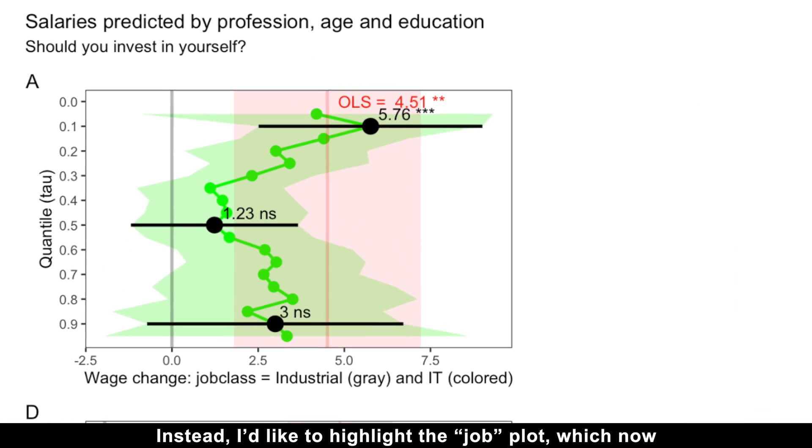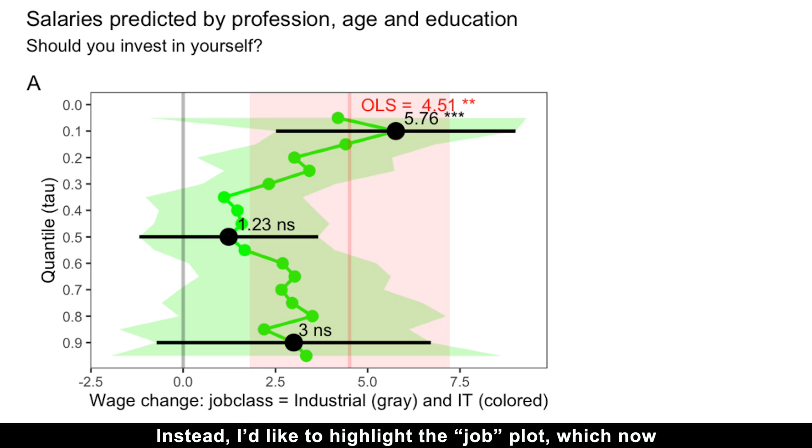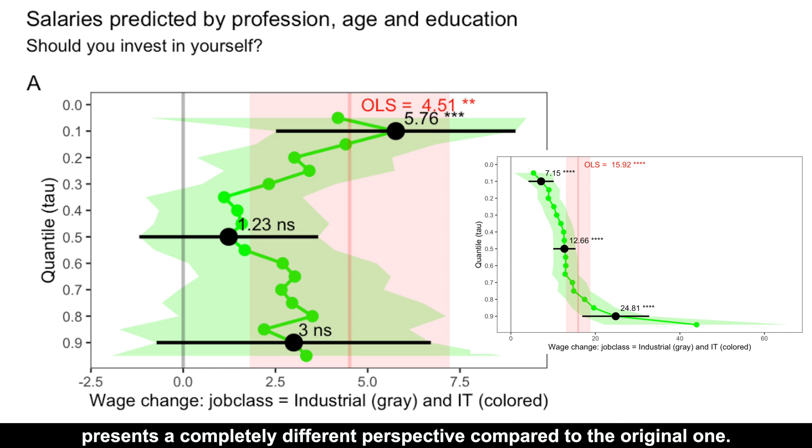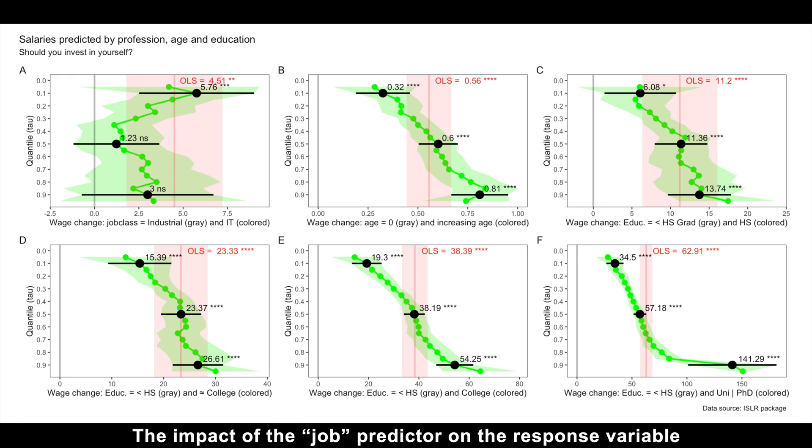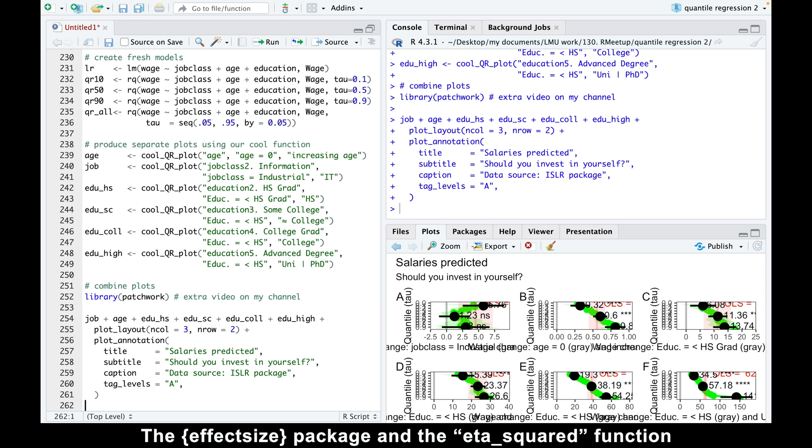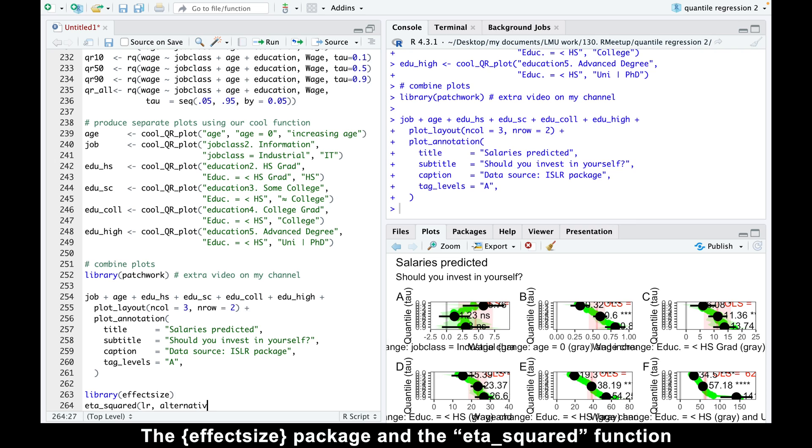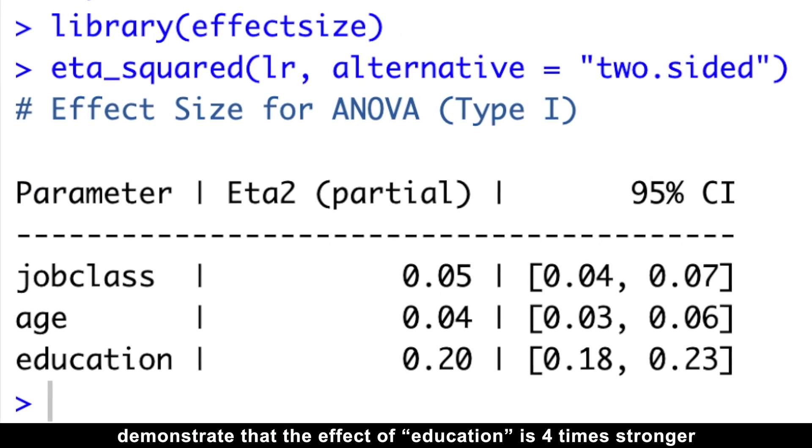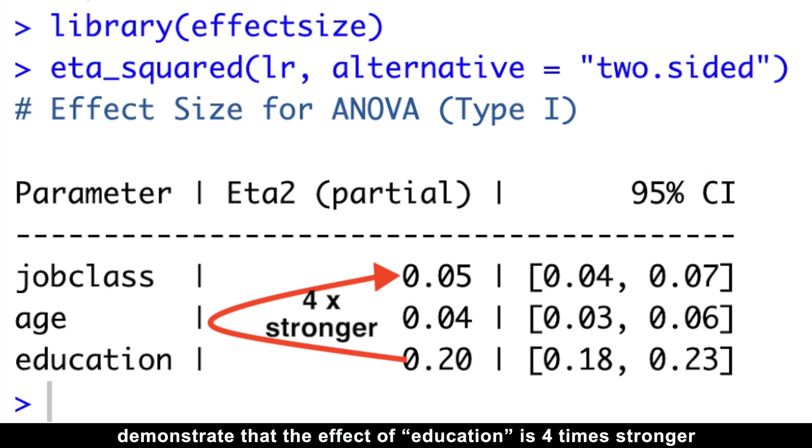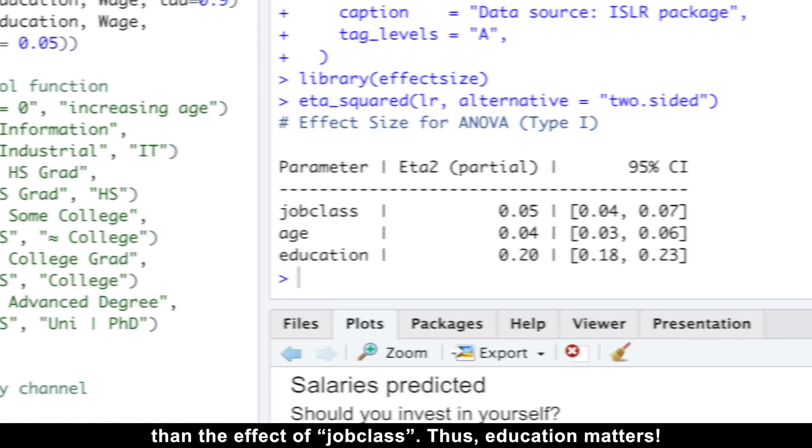I will not go into the code here since I just published a video on using the patchwork package. Instead, I'd like to highlight the job plot, which now presents a completely different perspective compared to the original one. The impact of the job predictor on the response variable changed significantly because we introduced a much stronger predictor for wage, namely education.